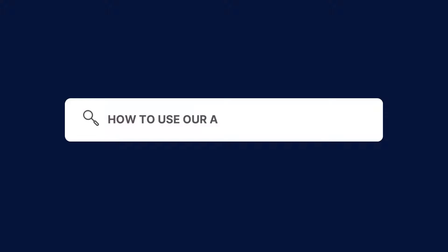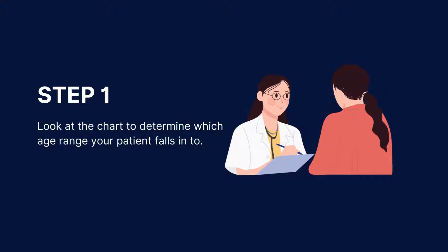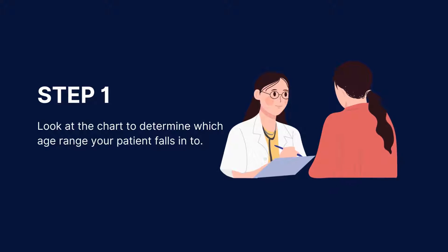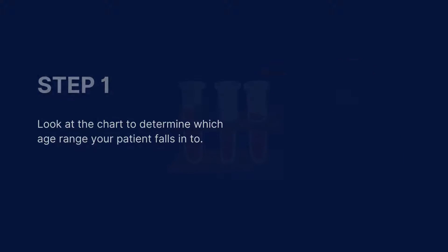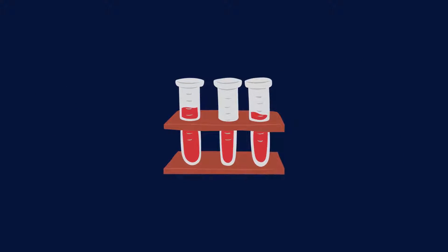To use our free A1C goals by age chart, follow these steps. Download our A1C goals by age chart from the CarePatreon platform, which you can find in the link in the description. Look at the chart to determine which age range your patient falls into, as the ideal A1C goal may be different depending on what it says.